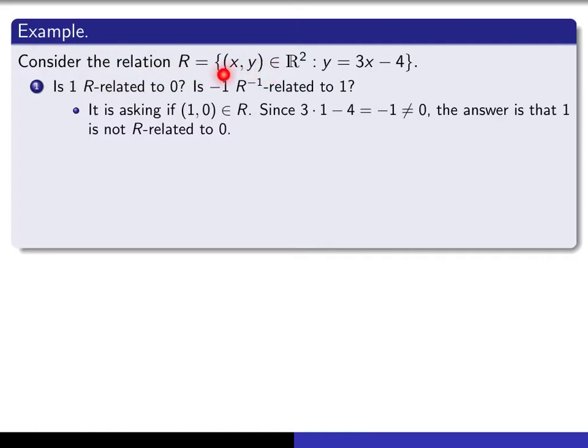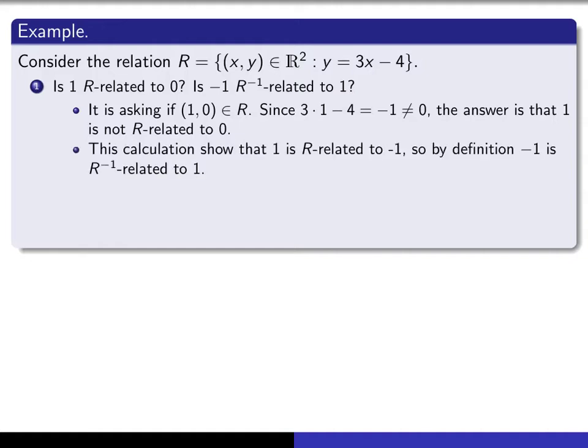Now they ask, is -1 R inverse related to 1? We just finished showing that 1 is R-related to -1. That means (1,-1) is an element of the relation R. Therefore, if you reverse the order and write it as (-1,1), that is an element of R inverse. So the answer is yes, -1 is R inverse related to 1.